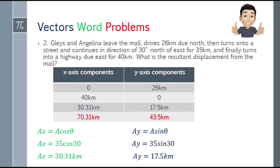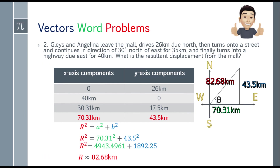Now let's get the totals. The total x-axis will be 70.31 kilometers, and the y-axis will be 43.5 kilometers. Both are positive, so that's east and north. For the resultant: r² = 70.31² + 43.5². Taking the square root, the resultant will be 82.68.